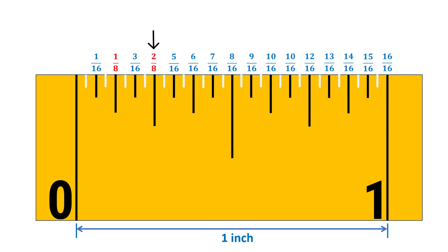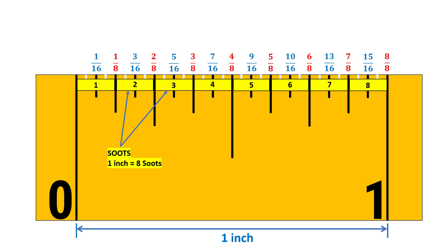4/16ths become 2/8ths, 6/16ths become 3/8ths and so on. In India, we call these 8th divisions as soot. For instance, 1 inch is equal to 8 soot.